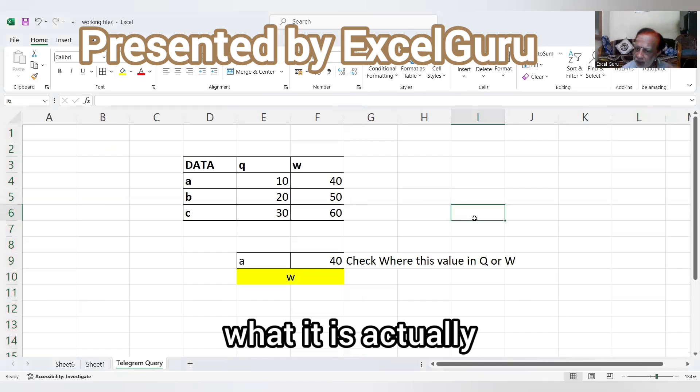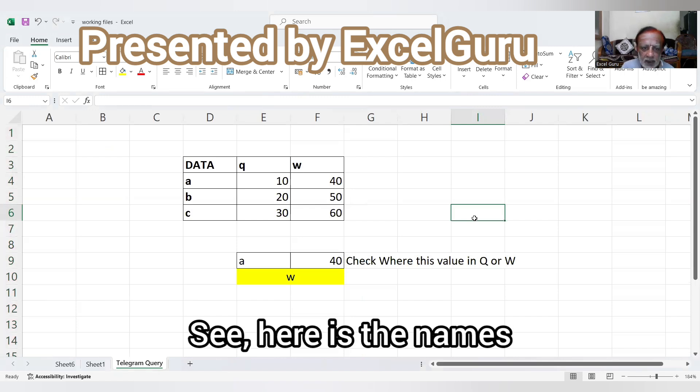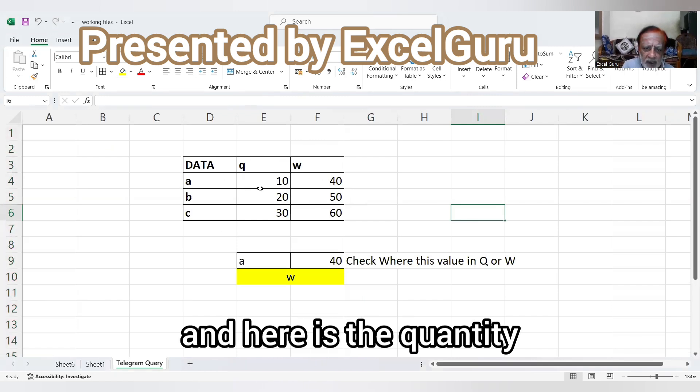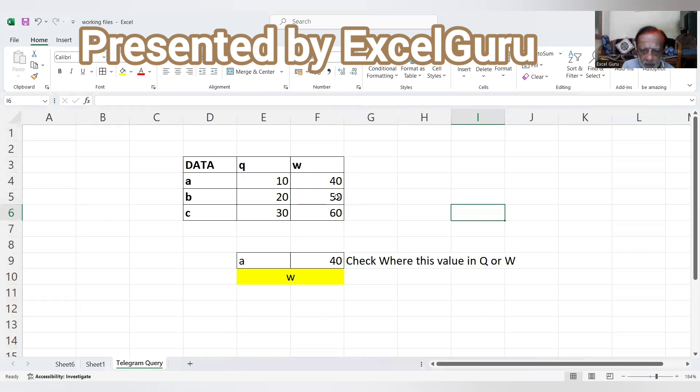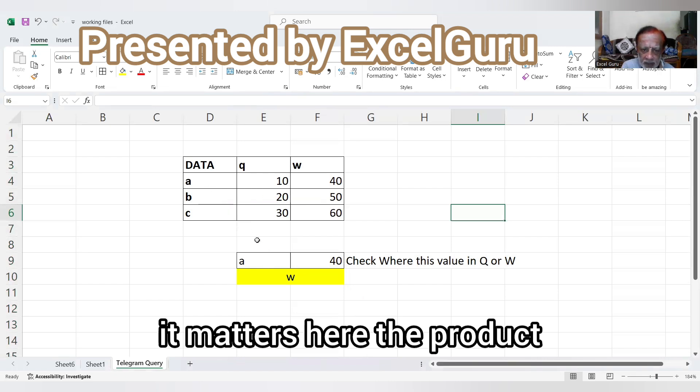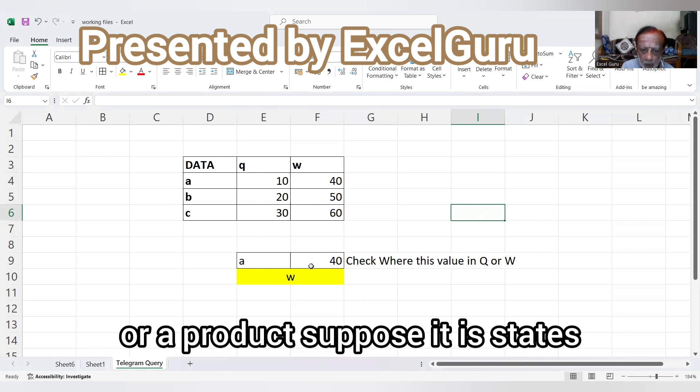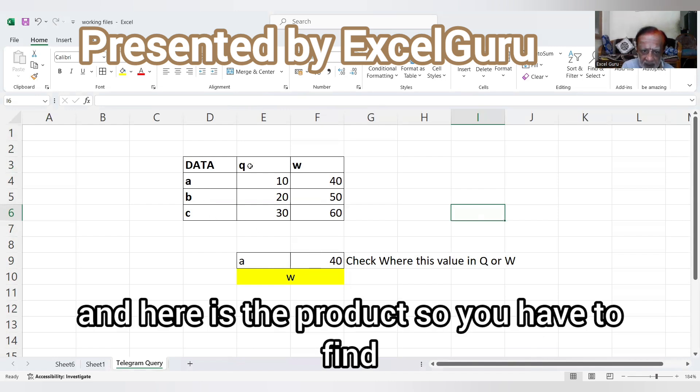Here is the query. See, here is the names - think like that. Here is the name, here is the product, and here is the quantity or sales amount or whatever it may be, some numbers.